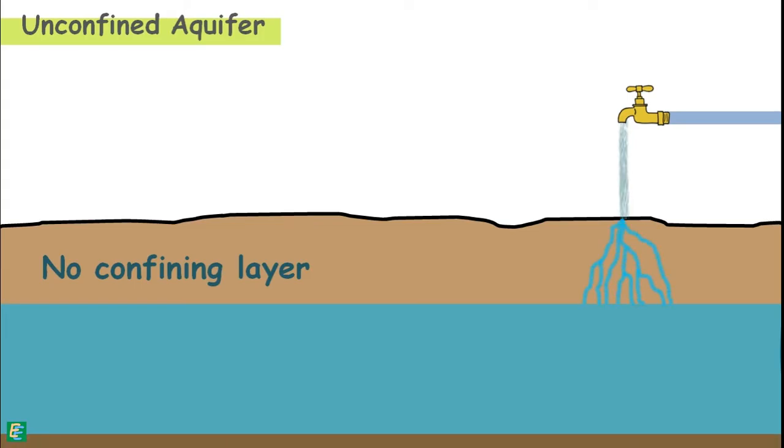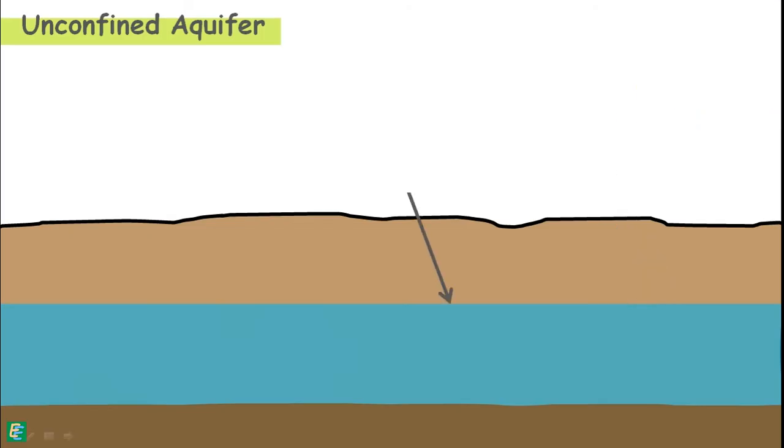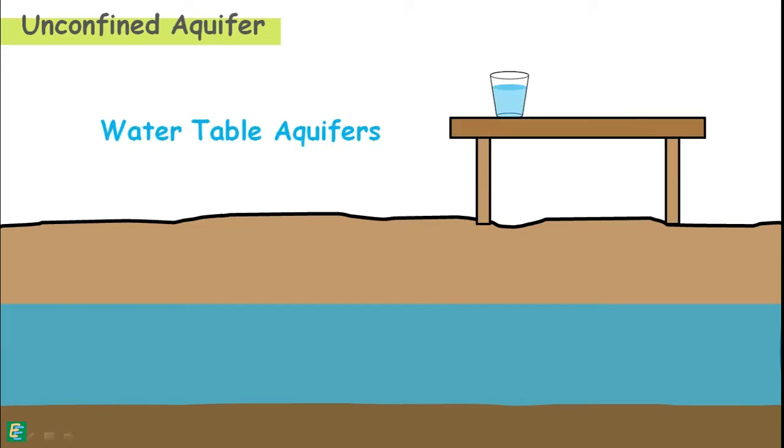An impervious layer may be present under the aquifer but not above it. The water level in the unconfined aquifer remains at atmospheric pressure. These aquifers are sometimes called water table aquifers because their upper boundary is the water table.